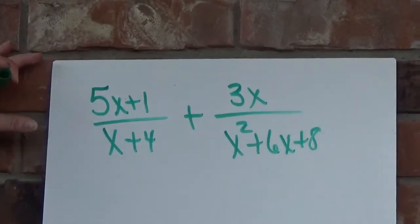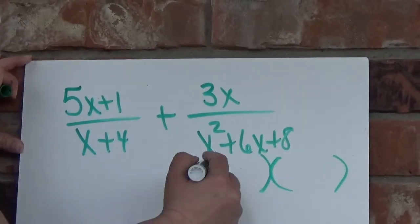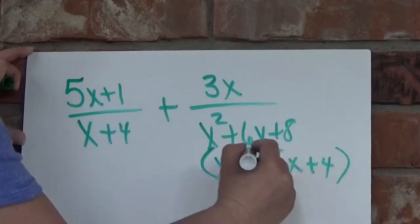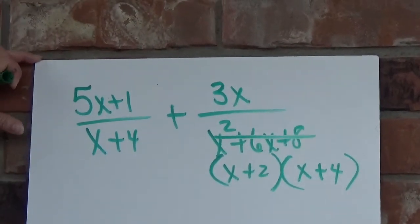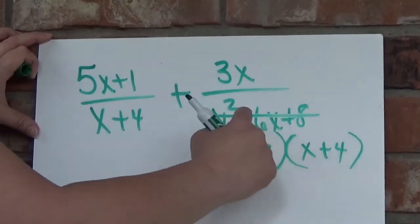So I want to go ahead and factor it before I find my common denominator. This factors to x plus 2 and x plus 4. That will help me when I find my common denominator to make sure I'm using the least common multiple if I factor this first.